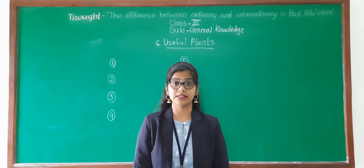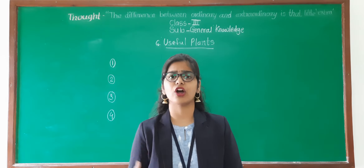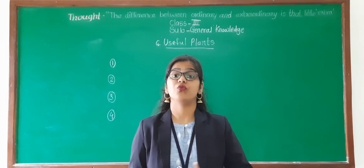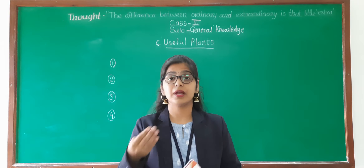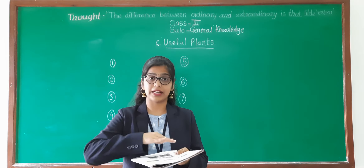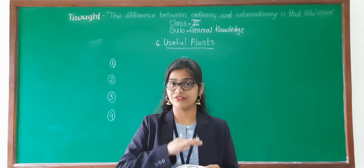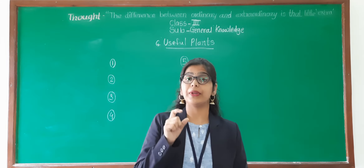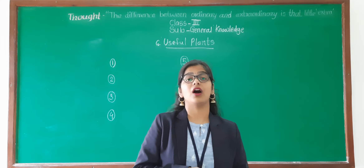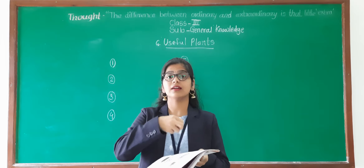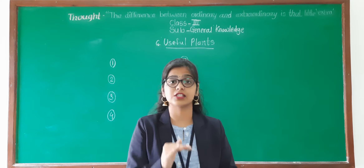The next use is plants prevent soil erosion. What is soil erosion? When heavy rainfall is there, that time soil from the ground is going with the water. So plants prevent that soil erosion. How? The roots of plants hold the soil tightly, and by that, it prevents the soil erosion.